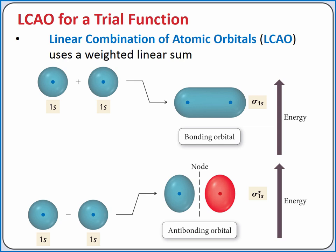For example, if we wanted to create molecular orbitals for two hydrogen atoms, we could add together the 1s orbitals from each hydrogen atom, or we could subtract them. When adding together the orbitals, anywhere we have electron density overlapping from the two orbitals, we'll consider it to be constructive interference of the two standing waves.